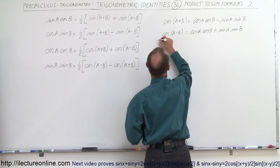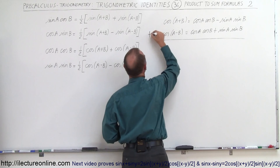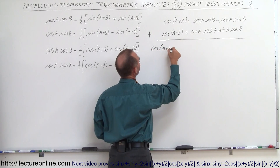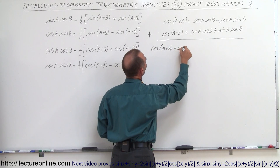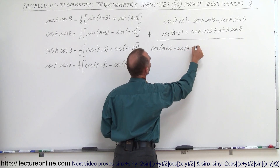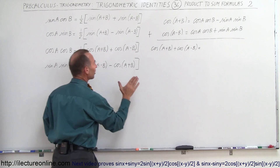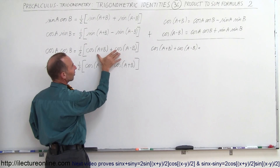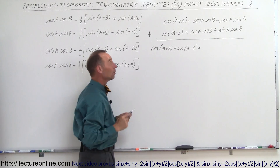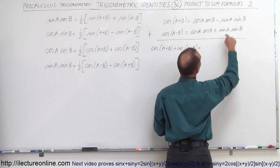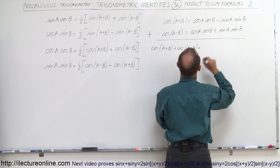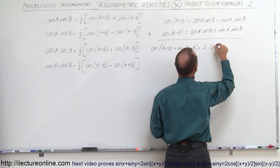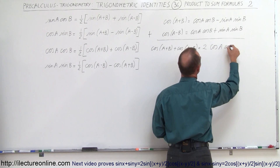Now what happens if we add the two equations together? On the left side we end up with cosine of A plus B plus cosine of A minus B. On the right side when we add the two together, notice that the sine terms cancel out, and we end up with 2 times cosine of A times cosine of B.